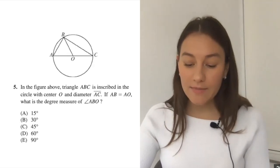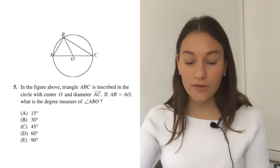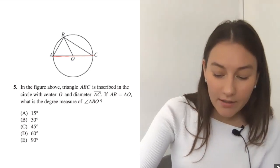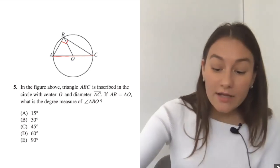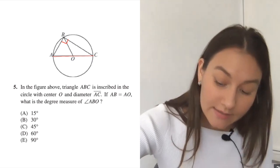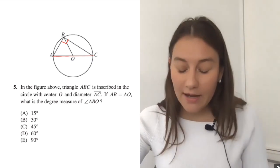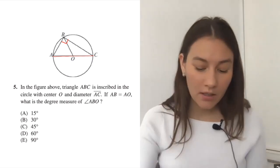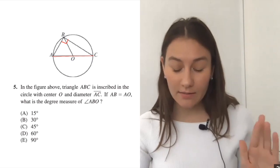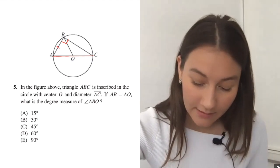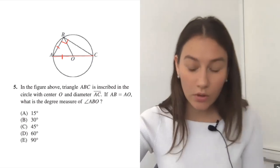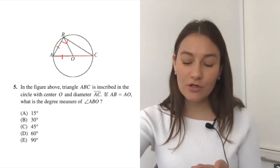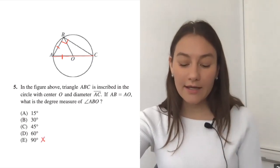Let's do a tougher one now. In the figure above, triangle ABC is inscribed in the circle with center O and diameter AC. Again, we have the diameter and it's a side of a triangle. So that entire angle B is going to be 90 degrees. Great. See if that helps me. Now I see if AB is equal to AO, what is the degree measure of ABO? That's a lot of words. Let me actually put that on my diagram. So AB is equal to AO. Cool. And I'm looking for ABO. Be very careful here.